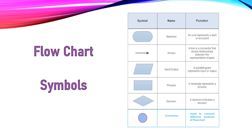Agar kahin pe decision lena ho toh decision lene ke liye hum yeh diamond box use karte hain. Diamond se humein koi bhi jab hum kisi point pe pahunchen toh us waqt humein ek decision lena ho — decision flow chart mein dikhate hain diamond se. Is mein do options nikalte hain — yeh logical operation dikhata hai, is mein YES ya NO pe kya action hogi. Aur yeh jo circle shape hai — yeh ho gaya connector — yaani jab hum flow chart doosri sheet pe draw karte hain toh hum wahan ek connector lagate hain, woh connector yeh circle shape hota hai.